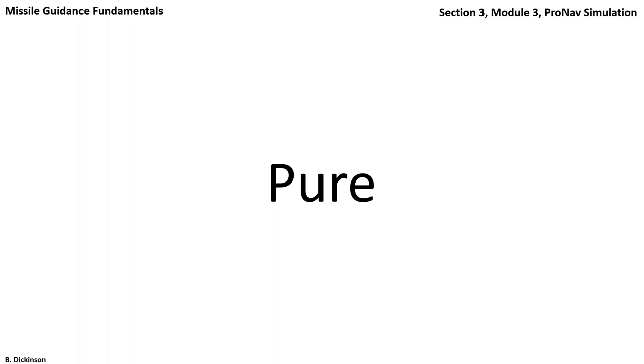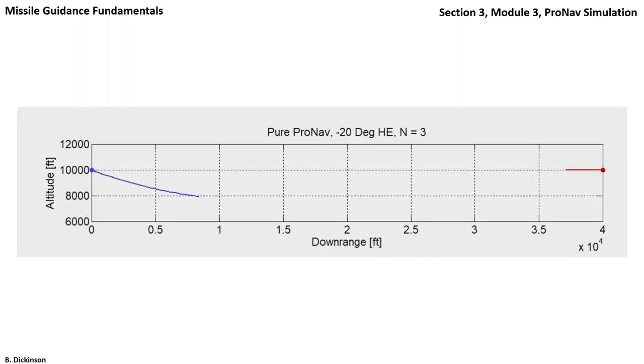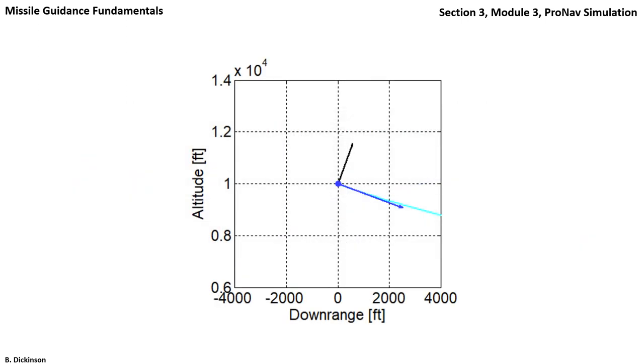Now, pure ProNav. The trajectories look similar. Following the pursuer, note that the pure ProNav command is perpendicular to the pursuer velocity vector.